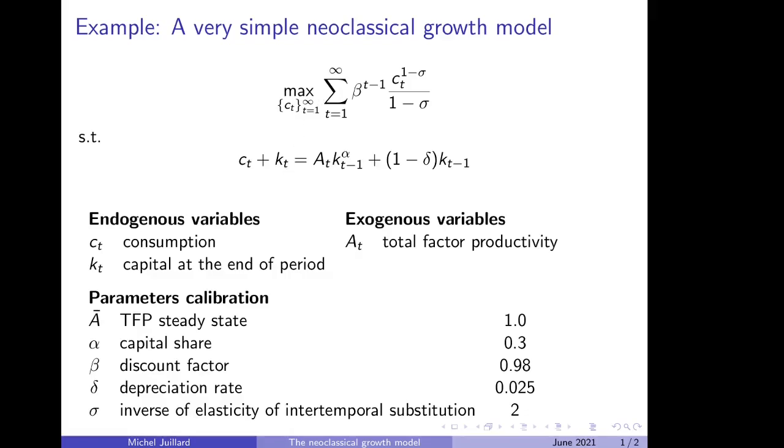In this model, there are two variables that are set by the model: consumption and capital stock. These are the endogenous variables, c_t and k_t, and there is one exogenous variable.